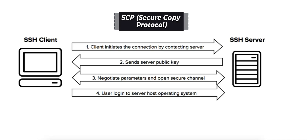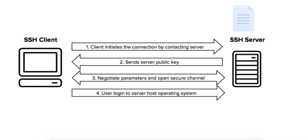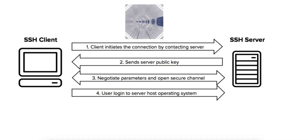SCP, or Secure Copy Protocol, allows the client to copy files to and from the server. It uses the underlying SSH connection to provide security, ensuring files are transferred over an encrypted channel. SSH also allows the client to run commands on the remote server, transfer files using SCP or SFTP, or even tunnel network traffic through the SSH connection.